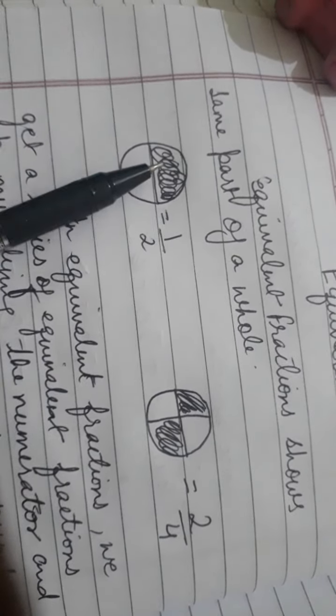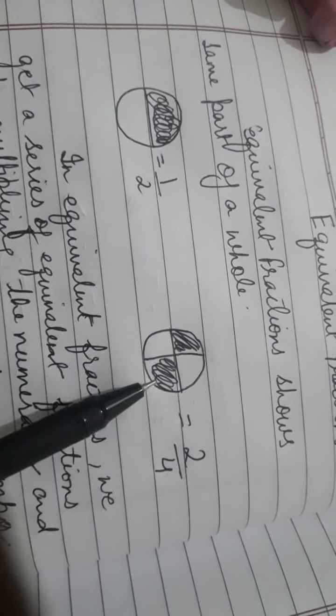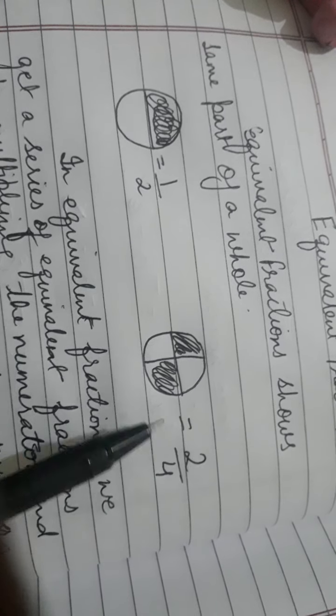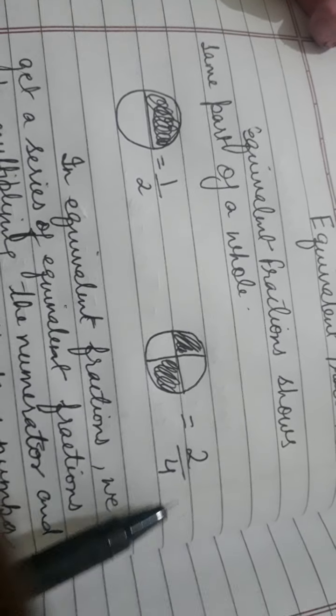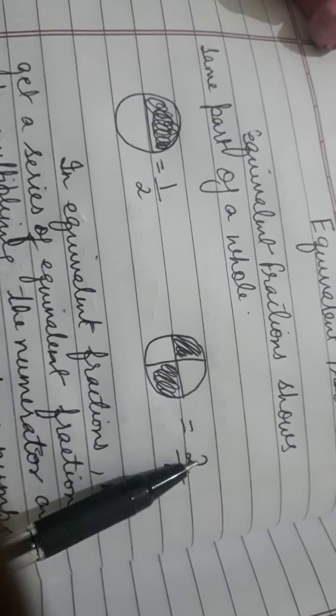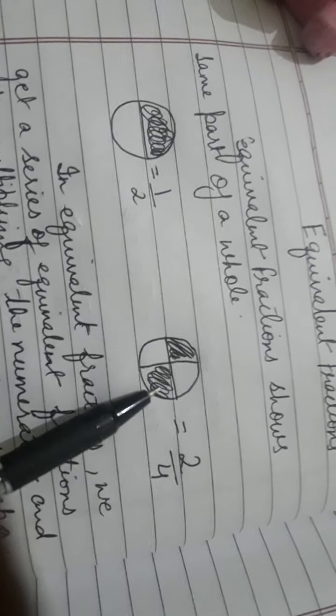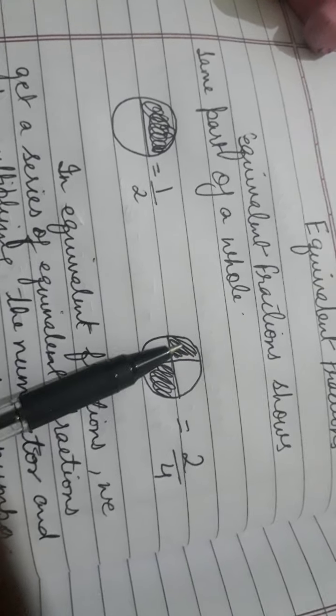This particular part is equal to this part. How? We have divided the whole circle into 4 equal parts. So what is the denominator here? 4, because the total number of parts is the denominator, written at the bottom. The selected part is written on top. We have selected 2 parts.